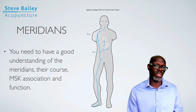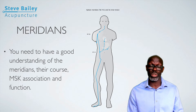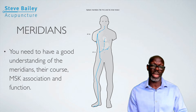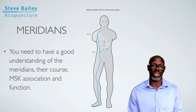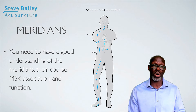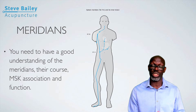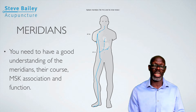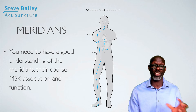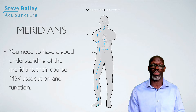Understanding where your meridians lie, where they run, and their association to the musculoskeletal aspect is important. For example, if you want to find a point on your spleen meridian, knowing the course of that meridian makes it easier to go straight to that location to get the appropriate point. It is therefore important to have a good understanding of the course of the actual meridian.